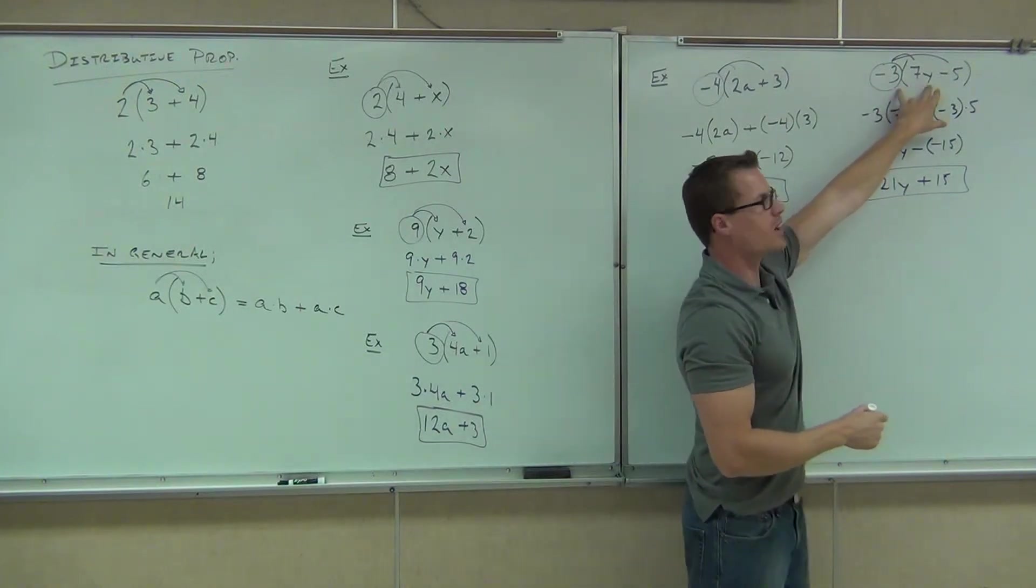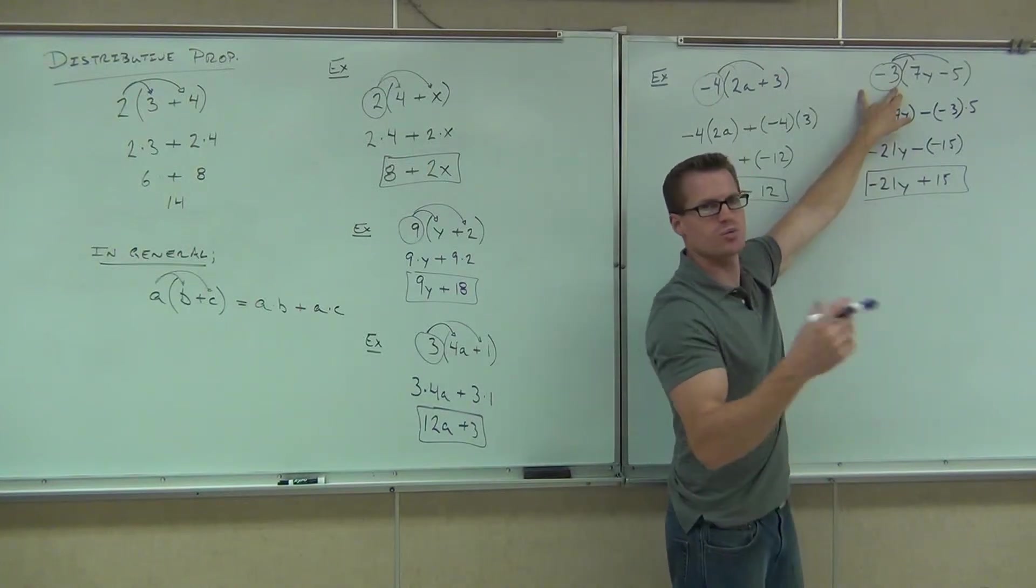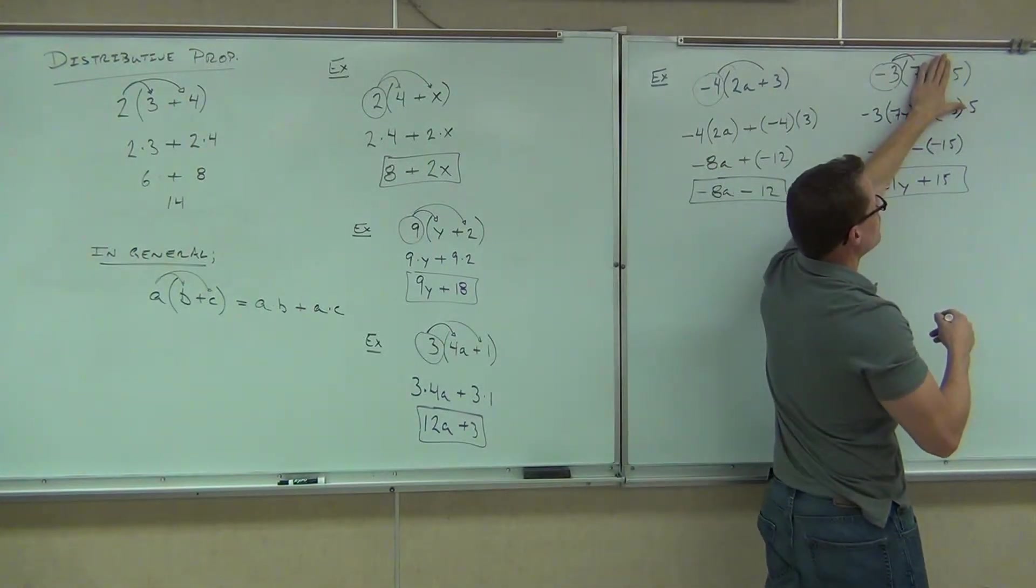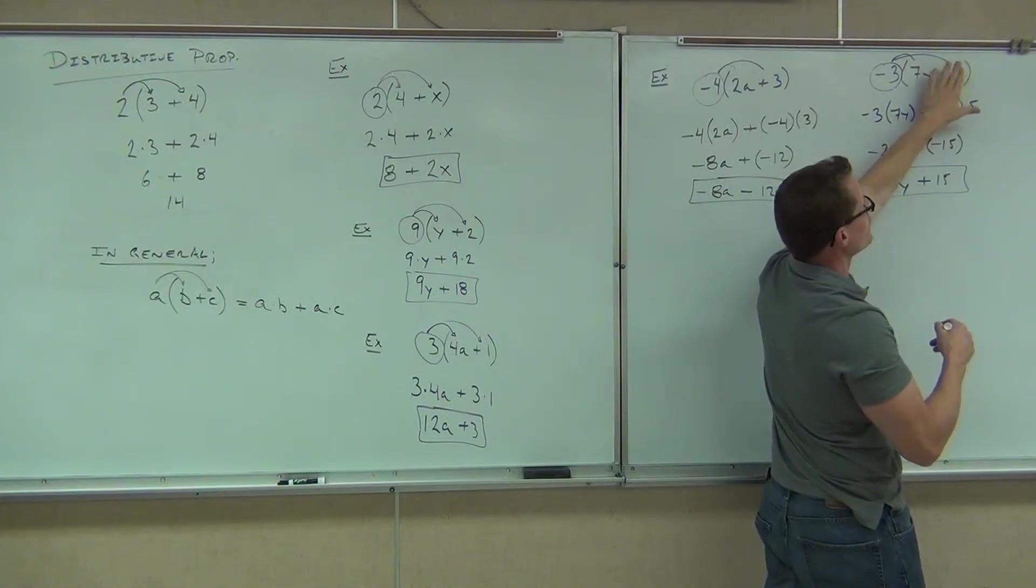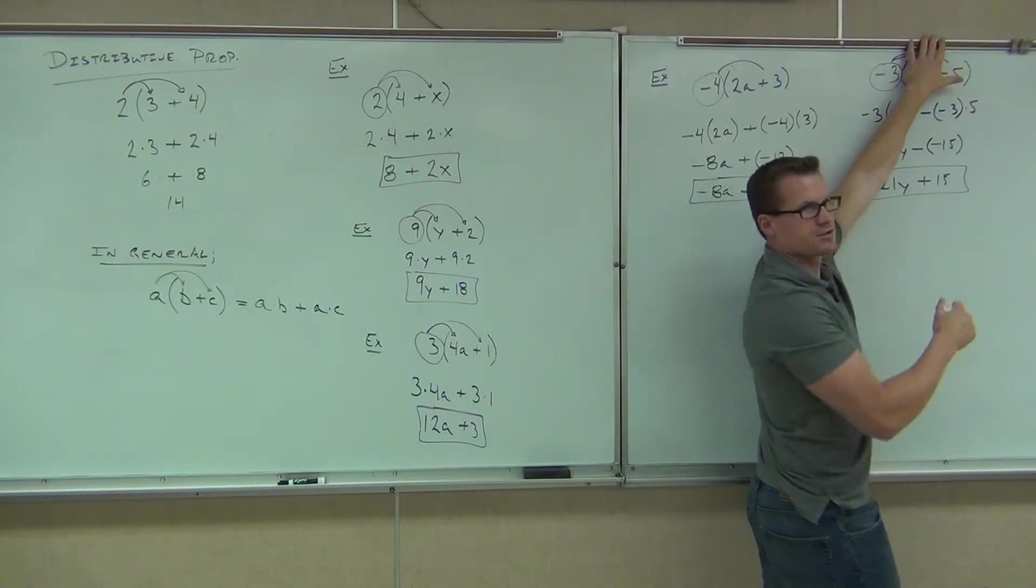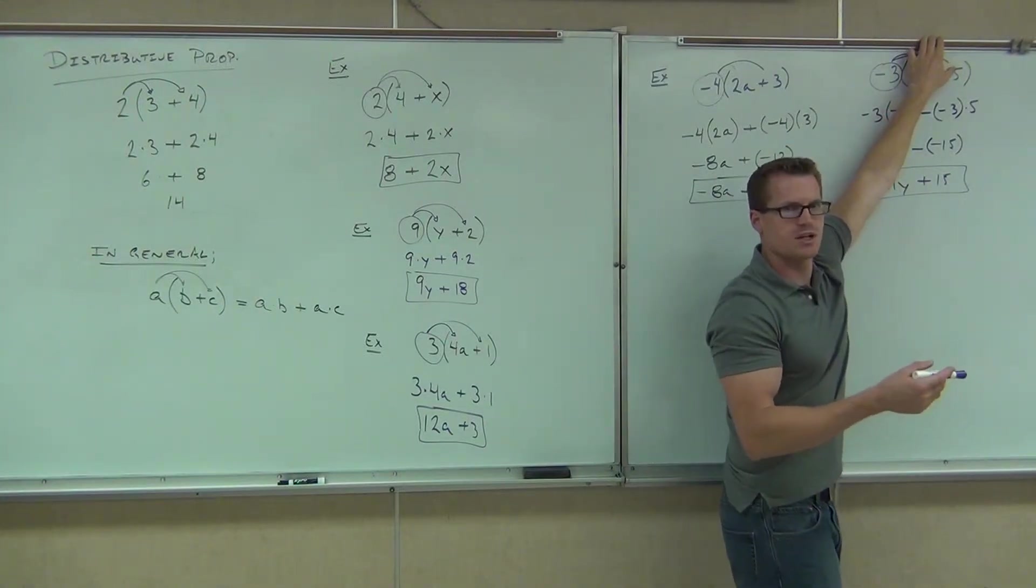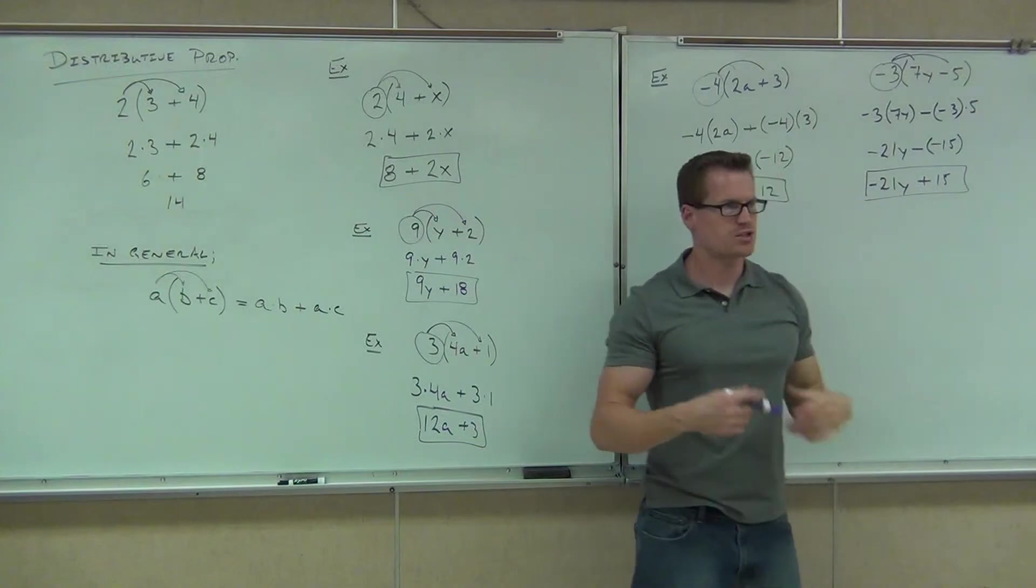What's negative 3 times positive 7Y? Negative 21Y. That works. What's negative 3? Here's what we do. Negative 3 times negative 5. Right. So we're going to do not 5, but negative 5. So negative 3 times negative 5 gives us? Positive 15. Positive. So for positive 15, we write plus 15. Are you seeing the connection here? Yeah. I think so.